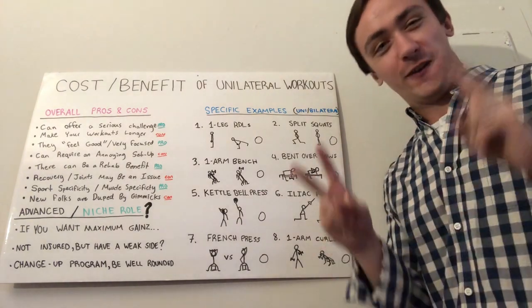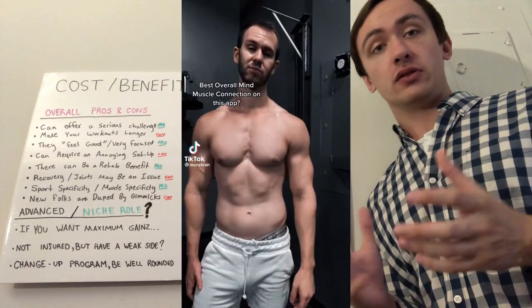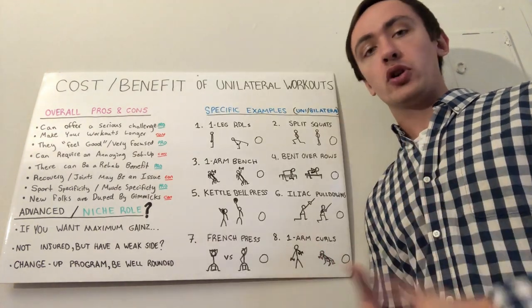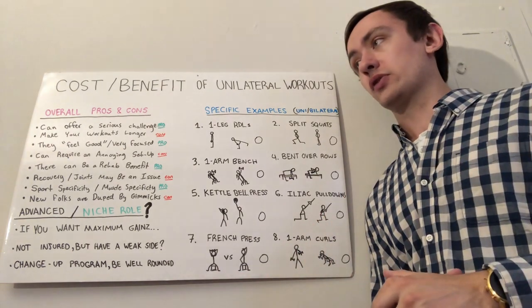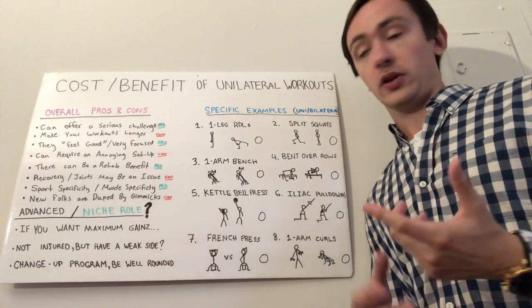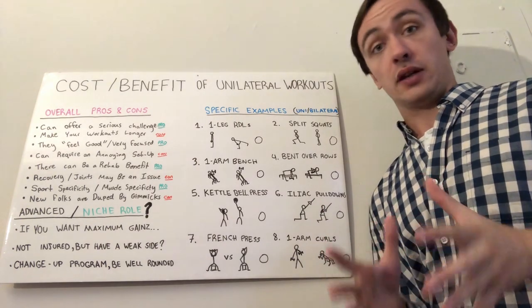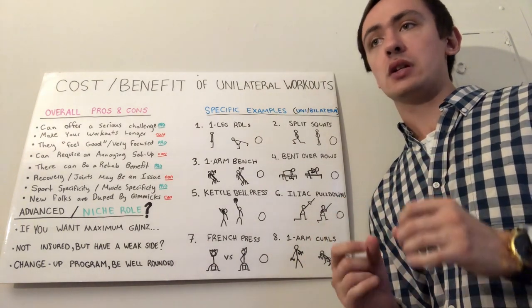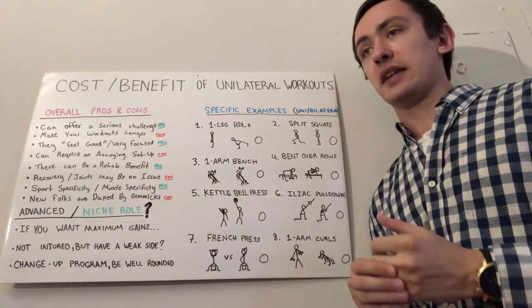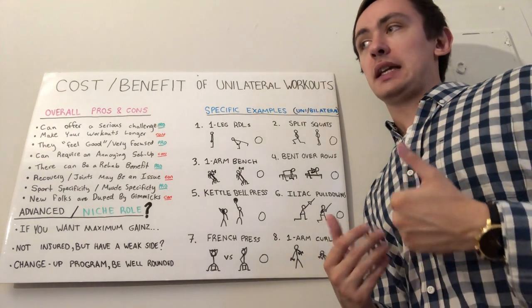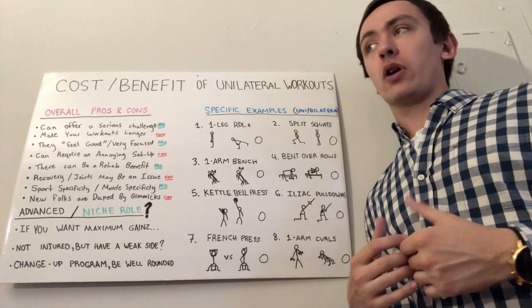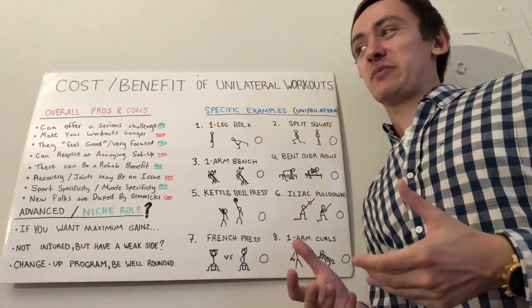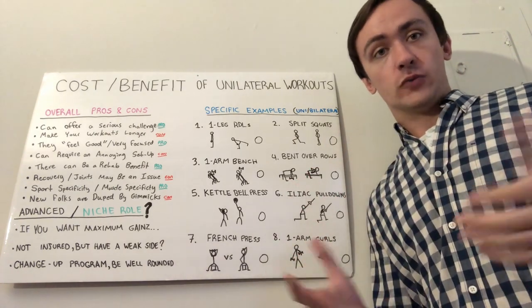At the same time, whenever you work the left side of your body and not the right and vice versa, you have to switch sides. Every time you add a unilateral exercise, this lengthens how long your workouts are going to take. That's definitely a con. But if you only have a few of them, that could be a way to still manage your time.